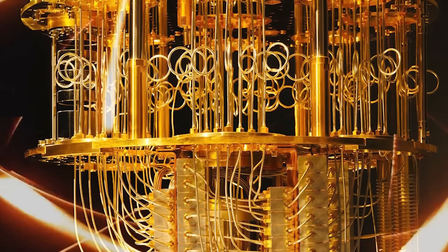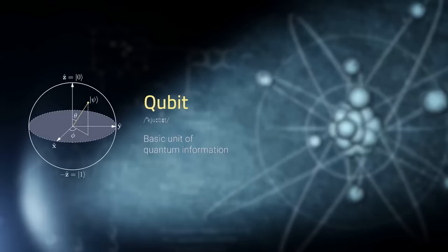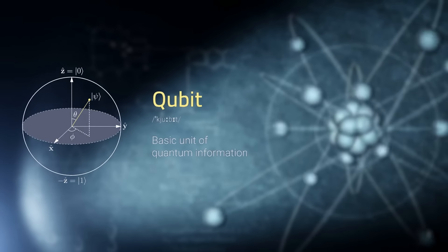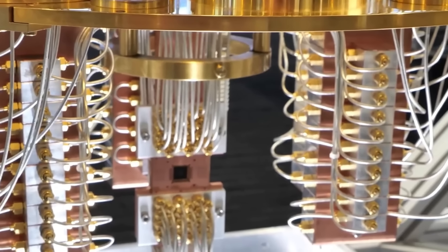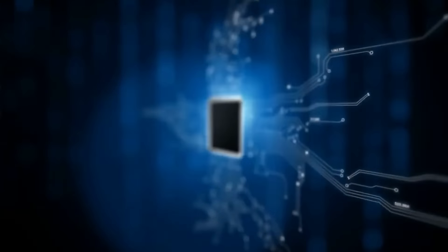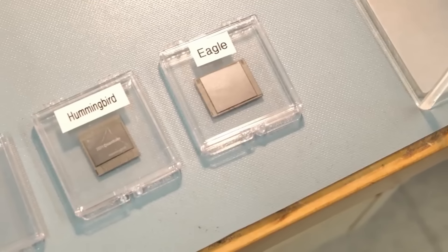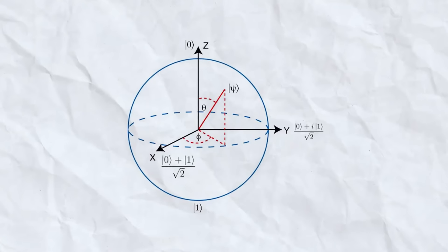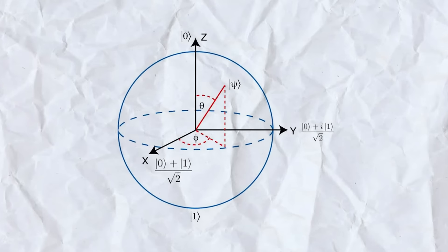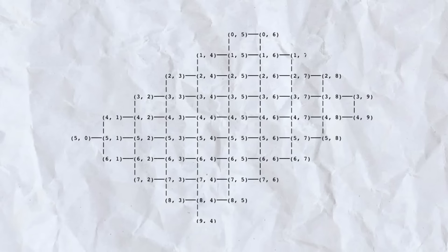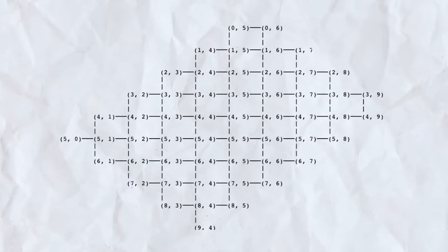Now, let's talk about what makes Sycamore tick. It's equipped with 54 qubits, which are the quantum version of computer bits, though during its moment of fame, one was taking a break, leaving 53 qubits to handle the computation. These aren't your regular bits. They're made from superconducting circuits and can be controlled and read out electronically. What's really cool is how these qubits are arranged. They're set up in a two-dimensional grid that allows for high connectivity, making it easier for them to interact and solve complex quantum algorithms.